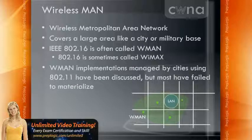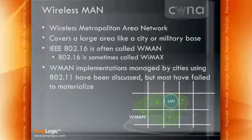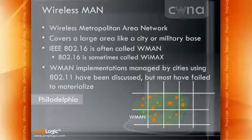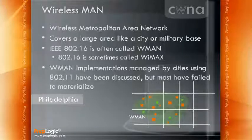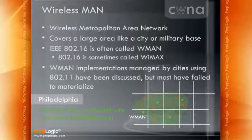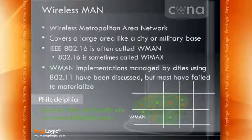Wireless MAN implementations managed by cities using 802.11 have also been discussed, but most of them have failed to materialize, and those that did materialize have had problems. For example, Philadelphia implemented a wireless network based on 802.11 with hundreds of access points around the Philadelphia area. However, it saw failure because they simply could not find a cost-benefit ratio — they couldn't get enough people to sign up for the service to make up for the cost of implementation, and toward the end of its life, it was losing about $200,000 per month. So 802.16 is more likely to be the one that ends up succeeding for these types of networks.